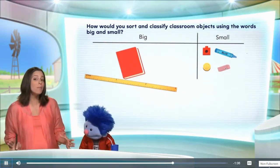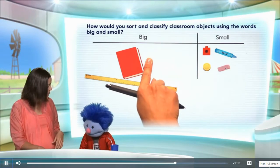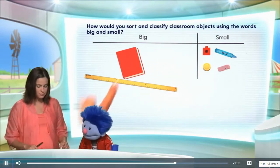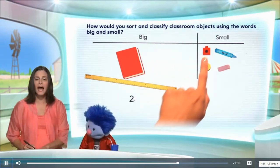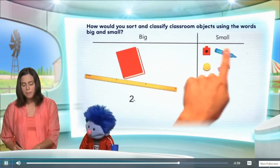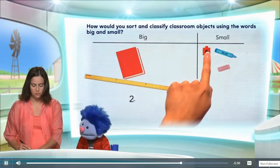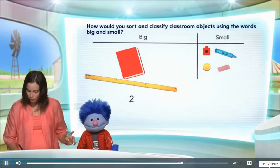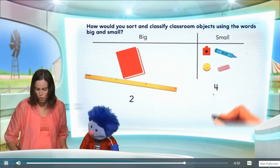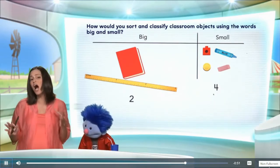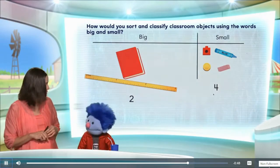So now how many objects do we have in the big category? One, two — you have two! Two, great, good job Joey. And how many objects do we have in the small category? One, two, three, four. Correct, Joey! Very good — two big objects and four small objects.